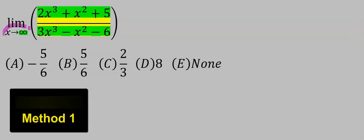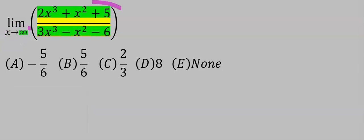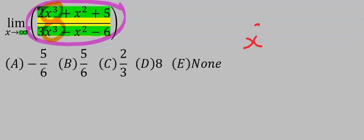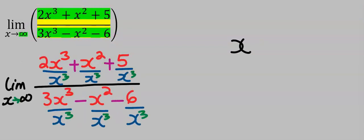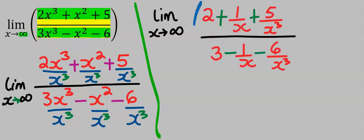The first observation is that x tends to infinity. Next, what is the highest power of x in the entire function? You can see it is x to the power of 3. Hence I will use x to the power of 3 and divide all the variables — divide each variable by x to the power of 3, because x³ is the highest power in the entire function.